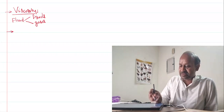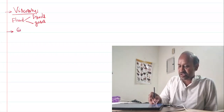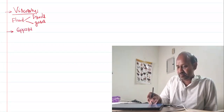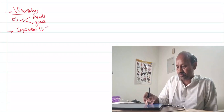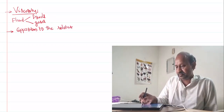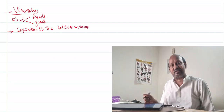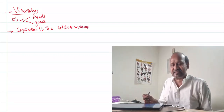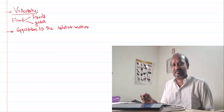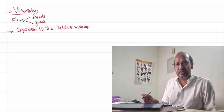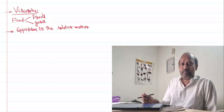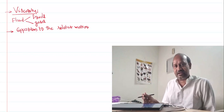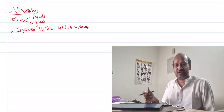When a fluid is moving, there is an opposition to the relative motion within the fluid. That property of the fluid is called viscosity. So why does that opposition to relative motion come in a fluid? That's what we are trying to explain here.